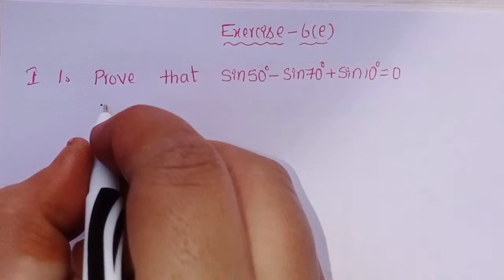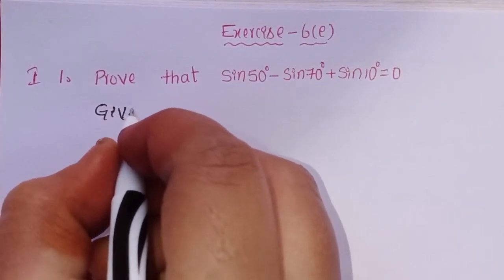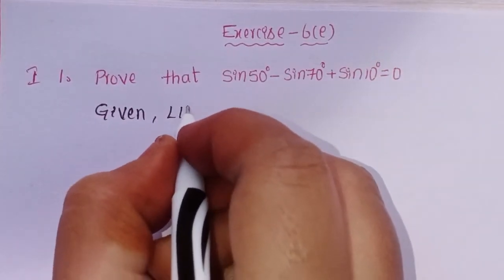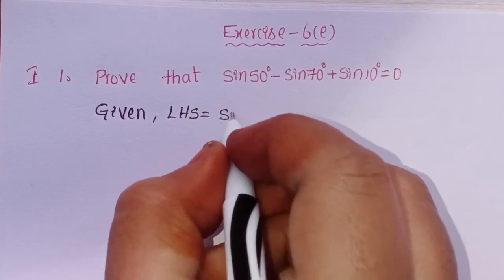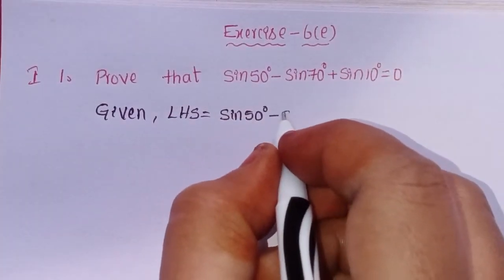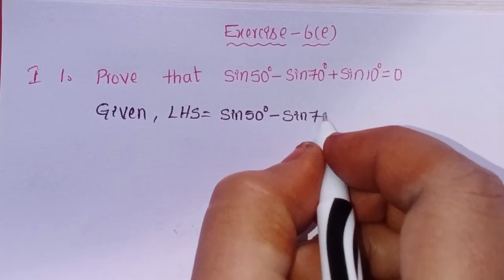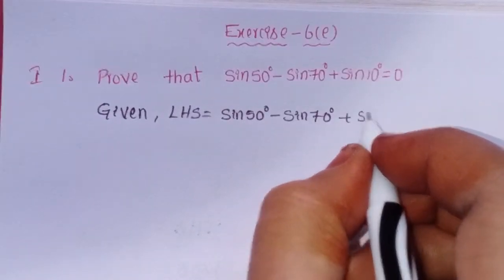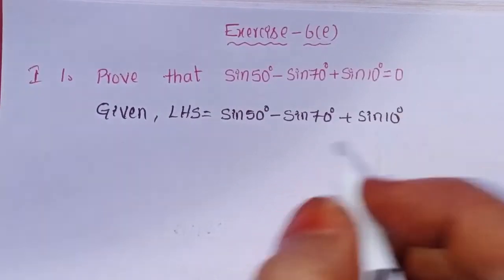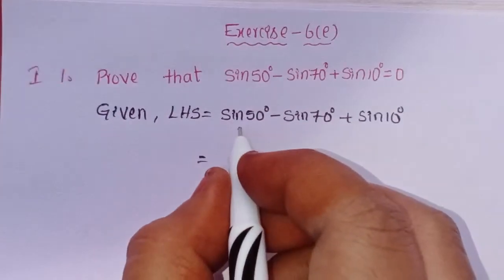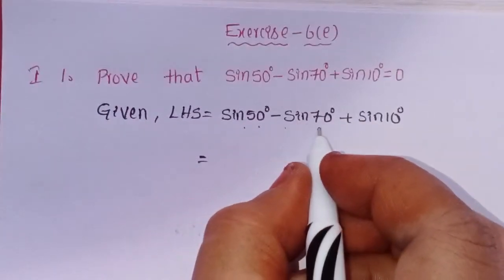Right? LHS. Given, LHS equals sin 50 degrees minus sin 70 degrees plus sin 10 degrees. Sin C minus sin D.